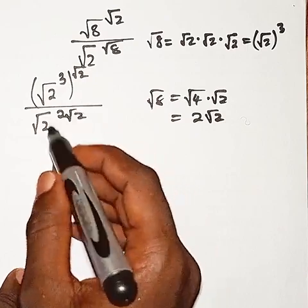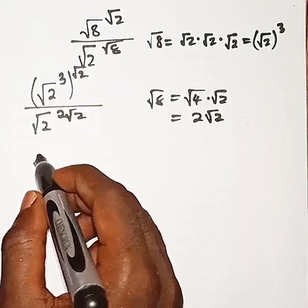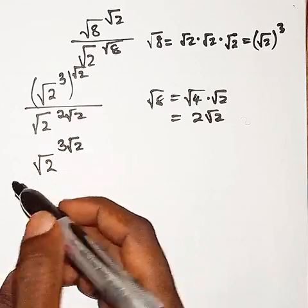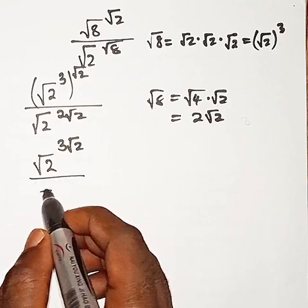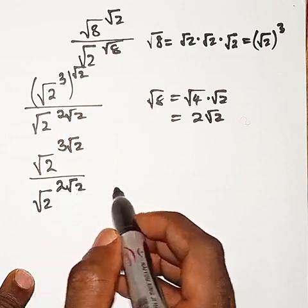From there, we can see that we are having the bases the same. We have root 2, 3 times this, because we are having 3 root 2, then divided by root 2, then 2 root 2.